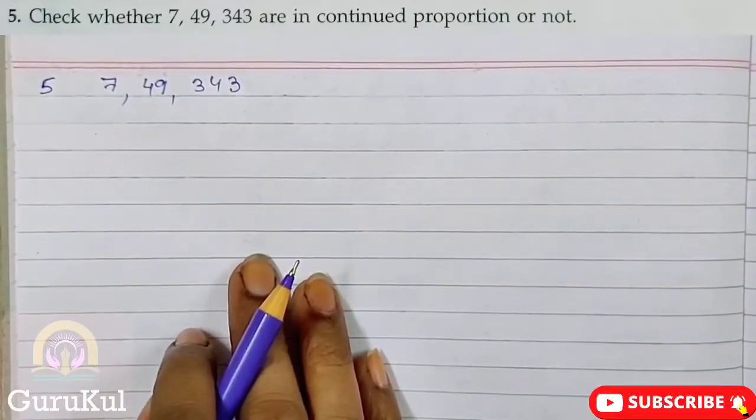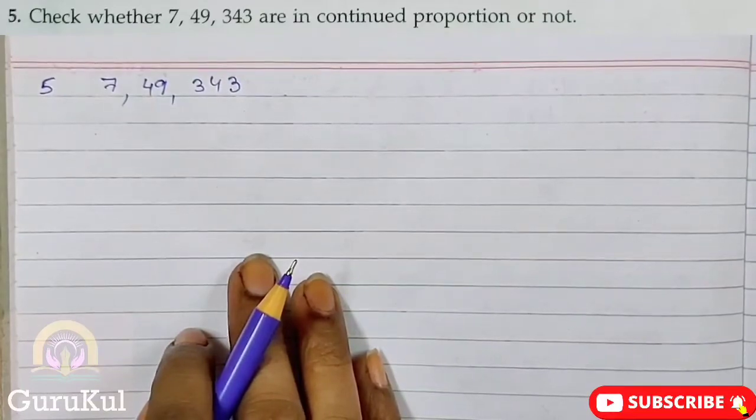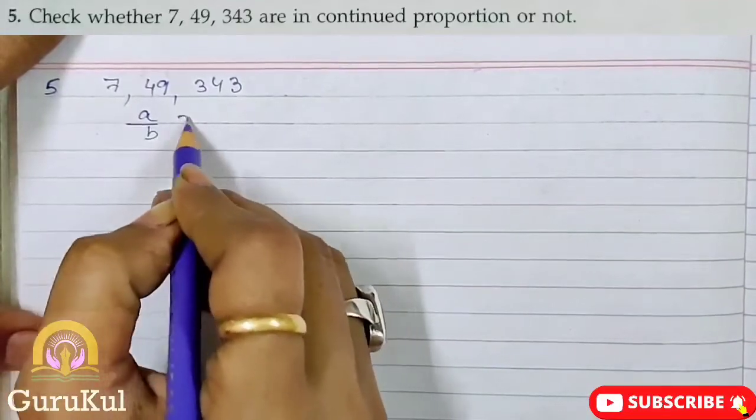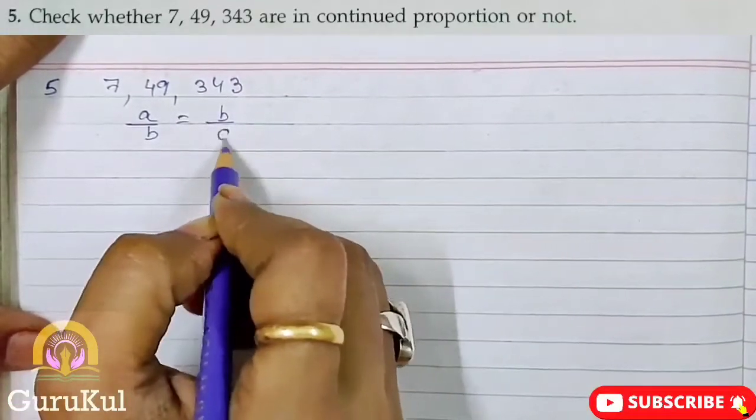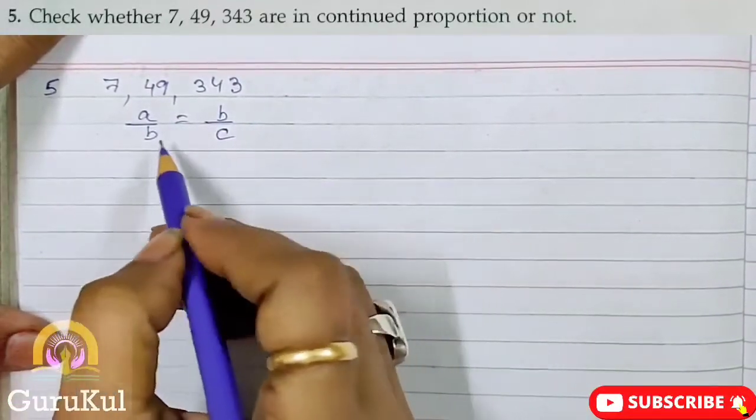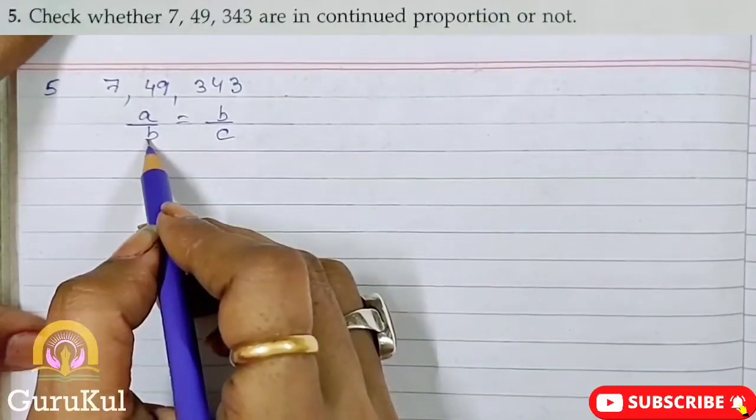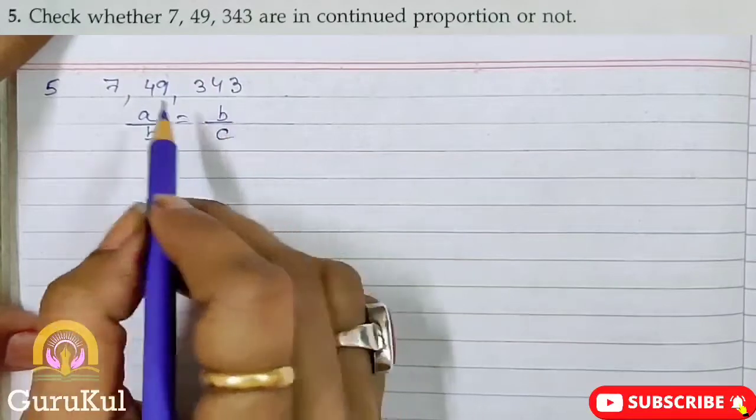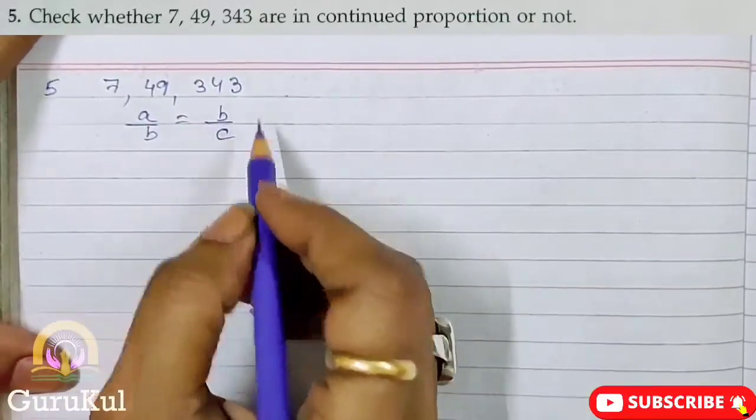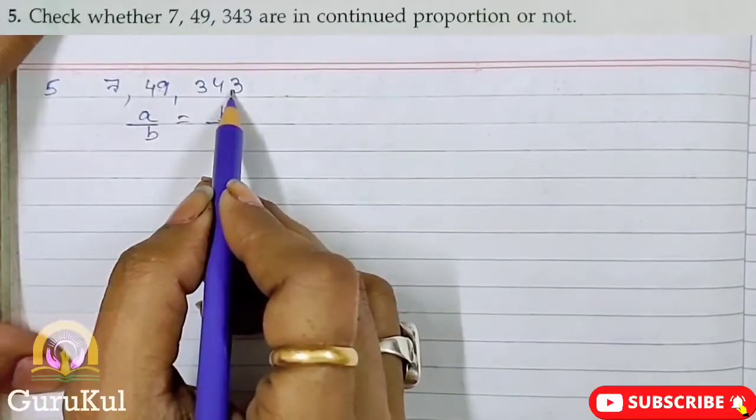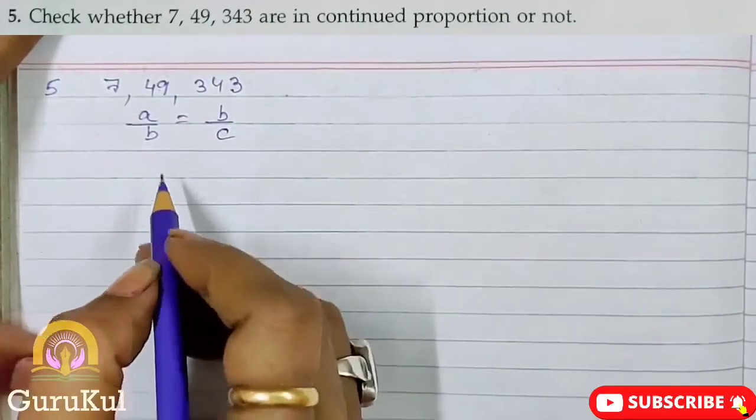Now for this to find out, there is a formula that is A by B is equal to B by C. Here we see B in both terms. This B we will move on to this place. Now what is this? This is A, B, and C. If we split this, then what will happen?